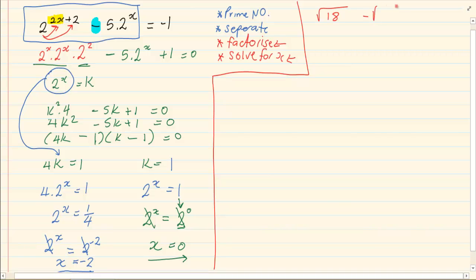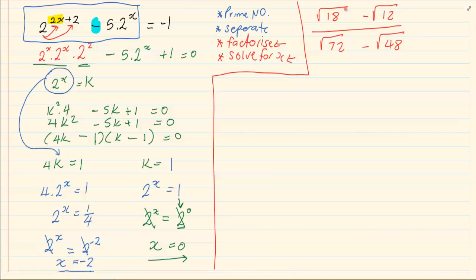√18 minus √12 all over √72 minus √48. Now the general rule for surds is when you have a number, if you press it in your calculator, it immediately gives you the answer. Right. Let's do √18. If we were doing it without a calculator, we would use the fishbone. Our answer would be 3√2.